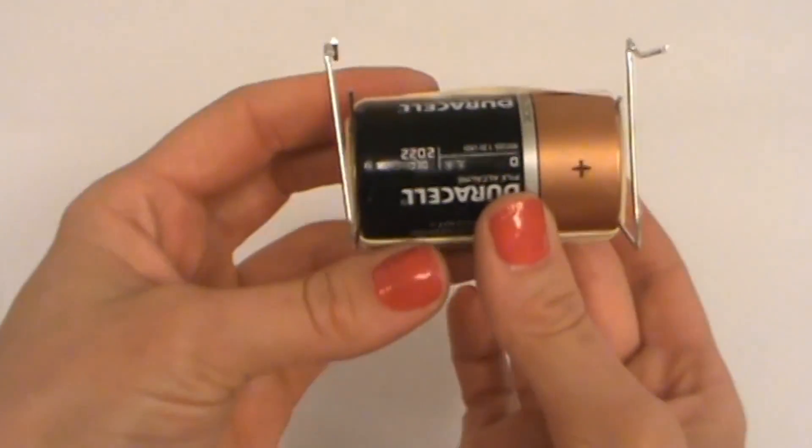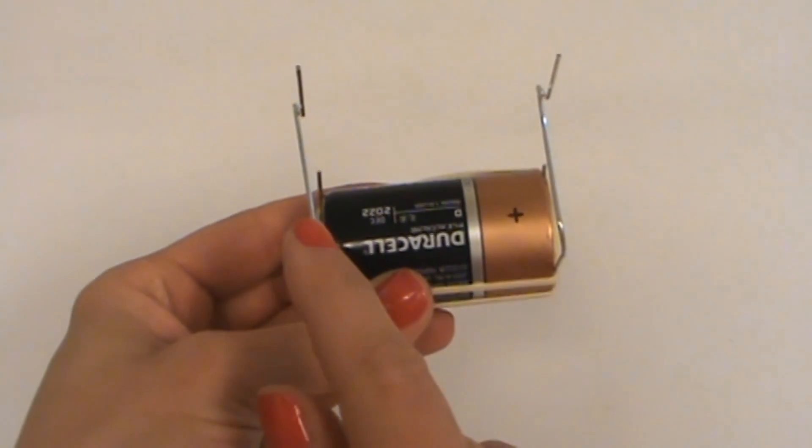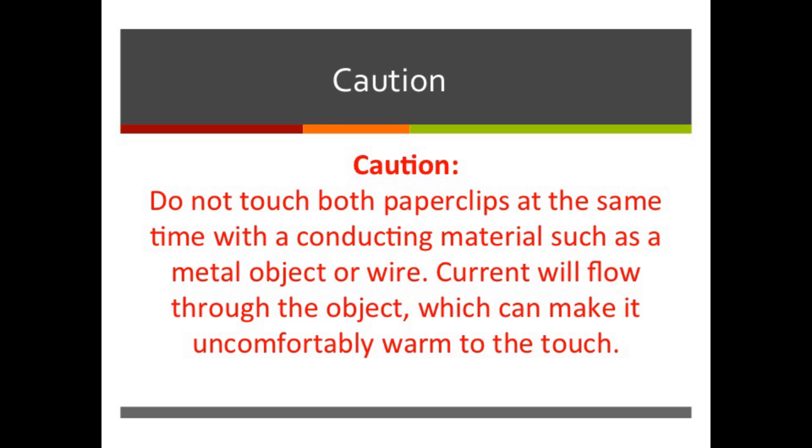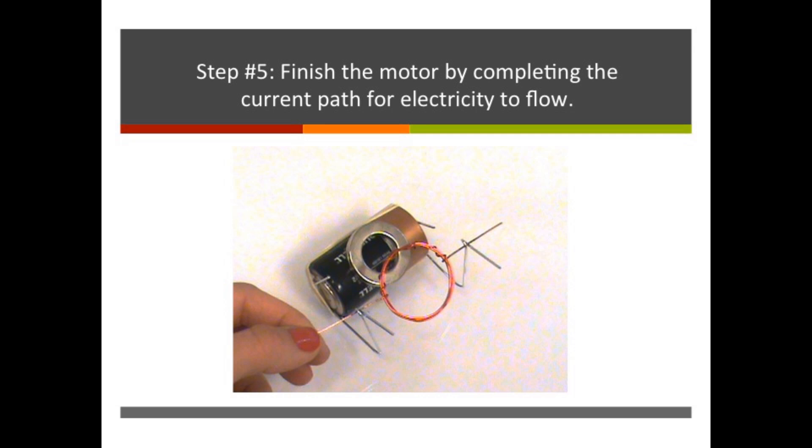These paper clips are conductors and will allow current to flow from the positive to the negative terminals of the battery when the path is connected via the wire coil. Current will flow through the object which can make it uncomfortably warm to the touch. Here's what your motor should look like so far. Now let's complete it by completing the current path.